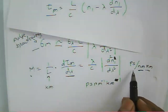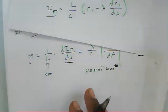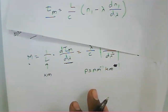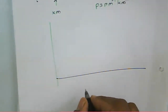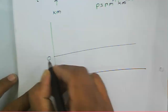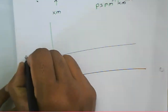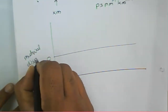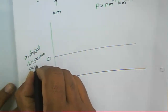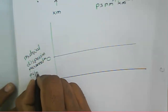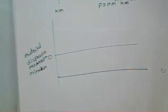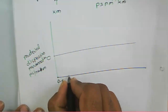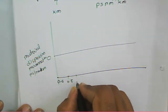Now we will look at the graph of material dispersion with respect to wavelength. On the graph, the vertical axis is the material dispersion parameter in picoseconds per nanometer per kilometer, and the horizontal axis is wavelength in nanometers.